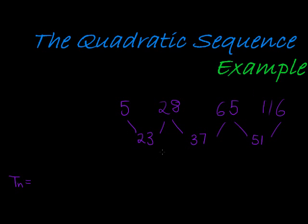Nice. 37 minus 23 gives me 14, and also 51 minus 37 also gives me 14. Yeah, I've got my constant second difference. Remember this was term one, term two, term three, and term four.